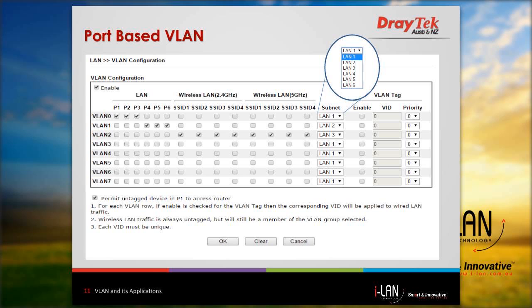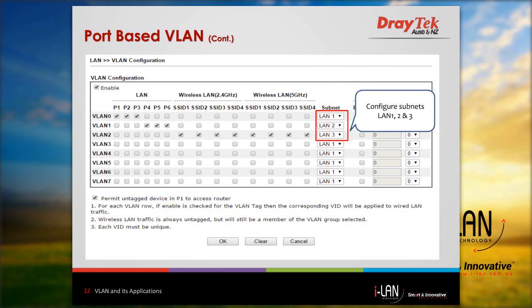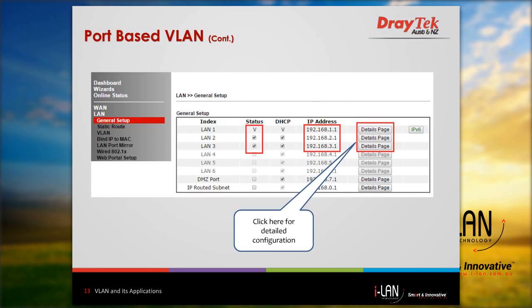We are assigning port number one, two and three as members of VLAN 0. Port four, five, six under VLAN 1 and all SSIDs under VLAN 2. Now we can configure LAN 1, LAN 2 and LAN 3 subnets. For this, go to LAN General Setup. On the LAN General Setup page, enable LAN 1, LAN 2 and LAN 3 and configure them one by one by clicking on the details page. That's how we can configure port-based VLANs, which is pretty simple.